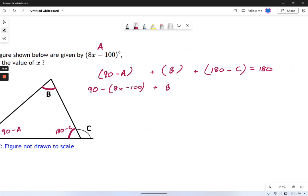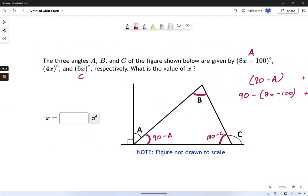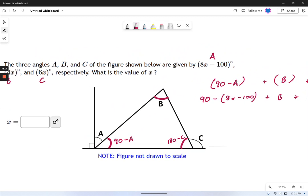Then I have b. Then I have this last angle, which is 180 minus c. Now what's c? I think that's given to me over here. There's c. There's b, by the way. Let's put those in also.